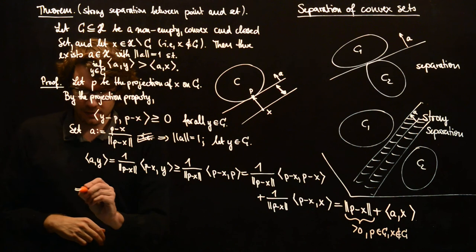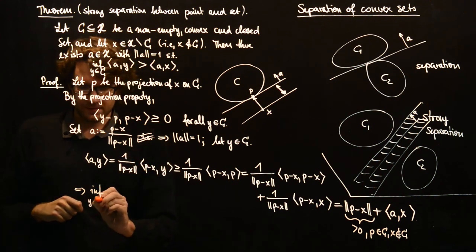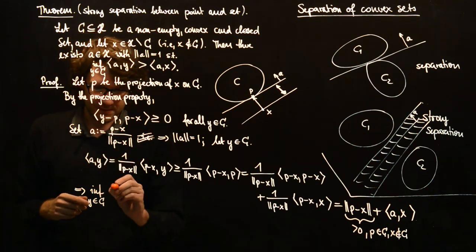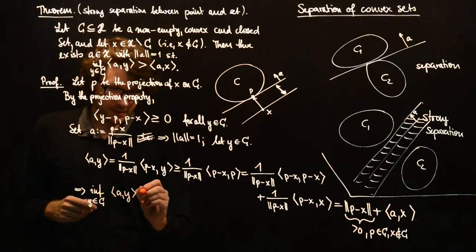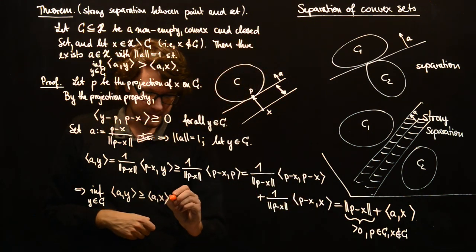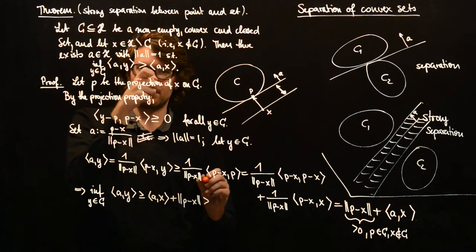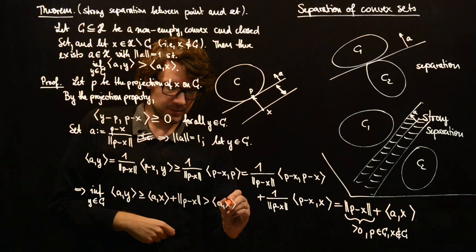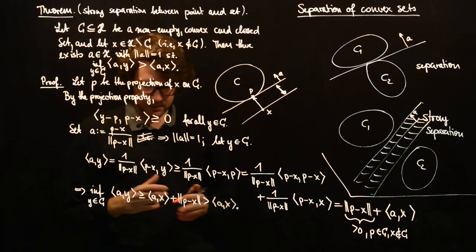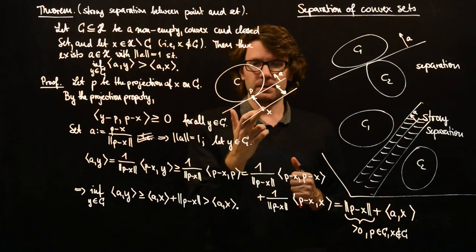Okay, so now we can use this and say the infimum over all these things, since we have this inequality for all the things, then the smallest possible of these values is still greater or equal than A of X plus norm of P minus X, and therefore properly greater than A of X, so not equal. So this concludes the proof of the strong separation theorem between a point and a set.